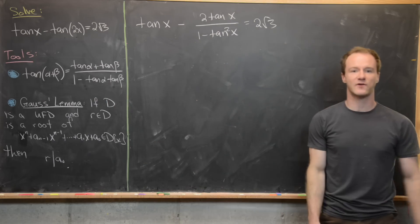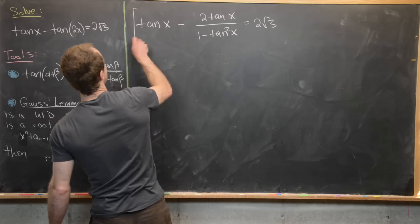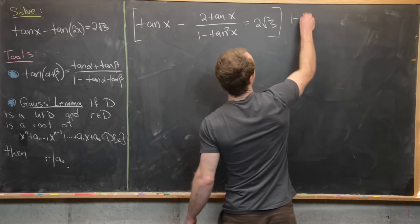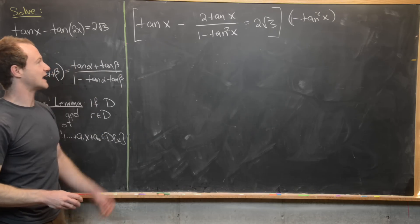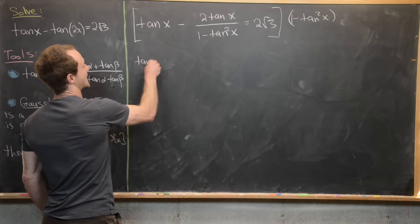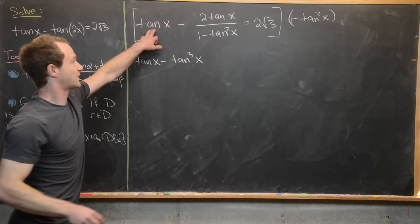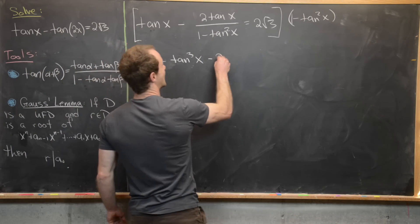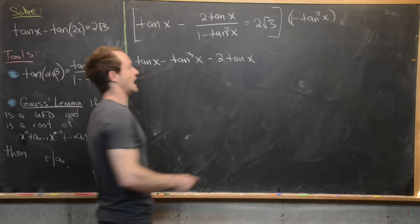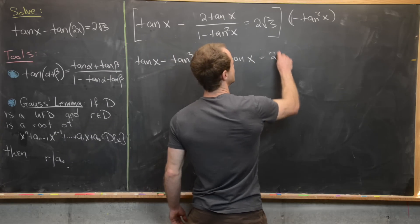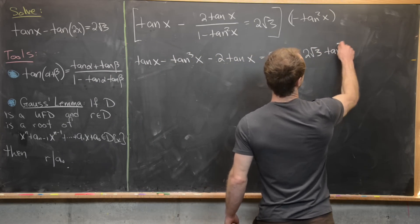That follows quickly from the sum angle formula. Now the next thing is to multiply the entire equation by 1 minus tangent squared of x to clear the denominator. That gives us tan x minus tangent cubed of x, then minus 2 tangent of x, equal to 2 root 3 minus 2 root 3 tangent squared x.